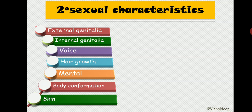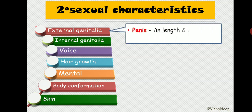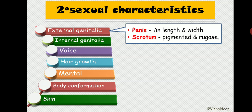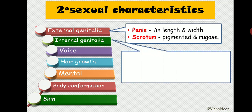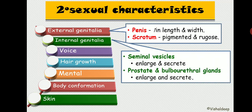As secondary sexual characters: testosterone increases the length and width of the penis, and increases pigmentation and rugosity of the scrotum. It causes the seminal vesicle to enlarge and secrete seminal fluid, and the prostate and bulbourethral glands to enlarge and secrete their respective fluids.